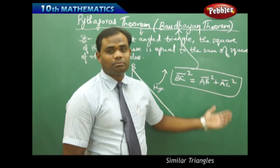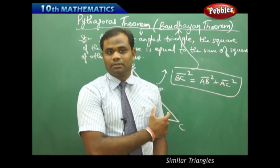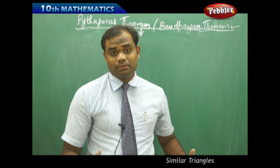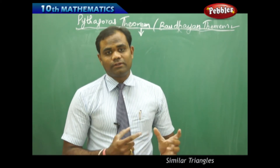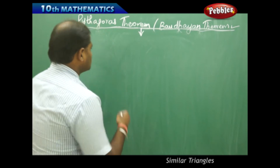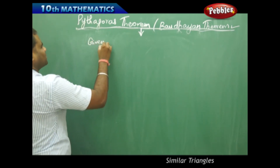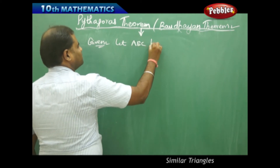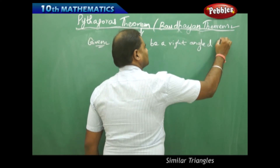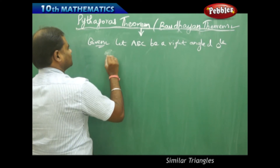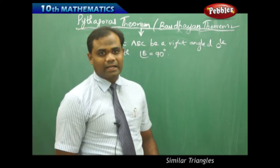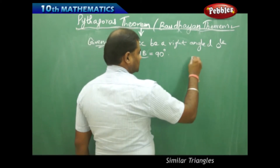Let's see how we can prove this using similarity of triangles connected with the Pythagoras theorem or Baudayan theorem. Let me take triangle ABC right angled at B, considering one of the angles as 90 degrees. In this case, the right angle of 90 degrees is assumed at vertex B. So in the given statement, let ABC be a right angled triangle with angle B equal to 90 degrees. That is, I consider the right angle at angle B. Therefore I have the diagram in this form.